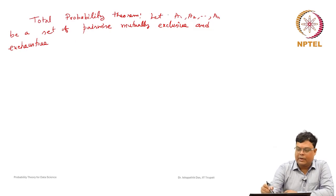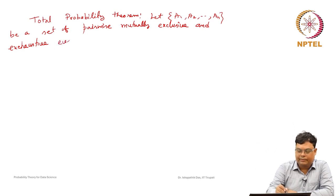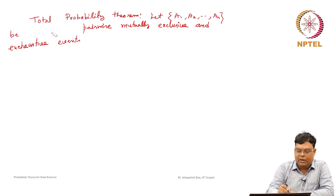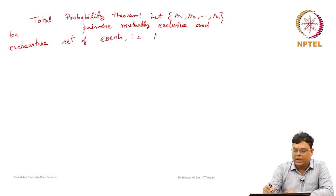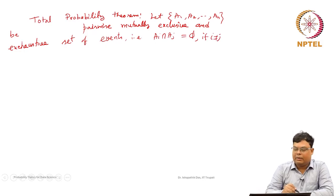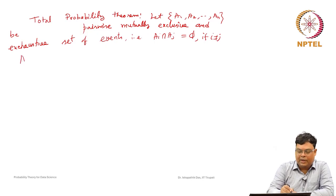So what does pairwise mutually exclusive and exhaustive mean? Pairwise mutually exclusive means A_i intersection A_j equals the empty set if i is not equal to j. And exhaustive means the union of A1, A2, ..., AN equals the sample space S.